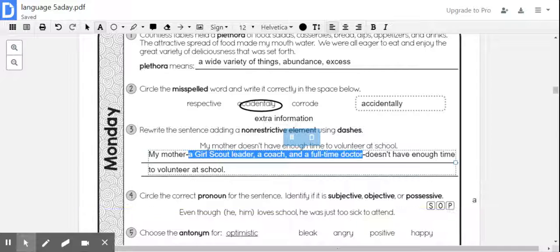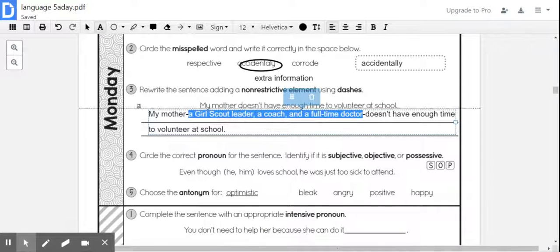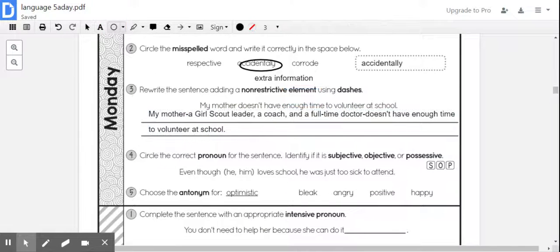Number four: Circle the correct pronoun for the sentence and identify if it is subjective, objective, or possessive. Alright, so it says, 'Even though he or him love school, he was just too sick to attend.' So it kind of already gives you the correct pronoun in the second part of the sentence. It would be 'he': Even though he loved school, he was just too sick to attend.